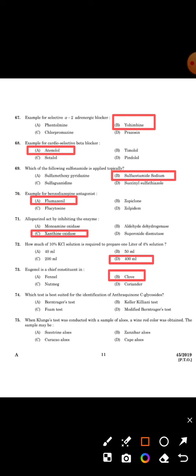Next question: Which test is best suitable for the identification of anthracenone C-glycoside? The answer is Option D, Modified Borntrager's Test.